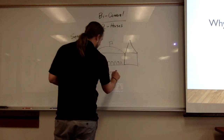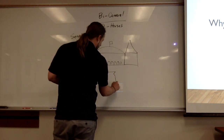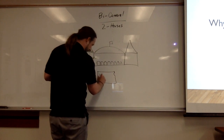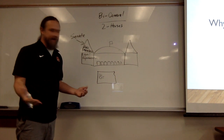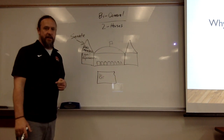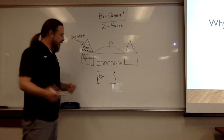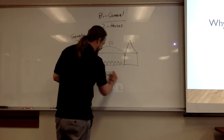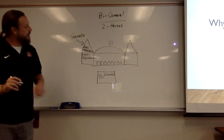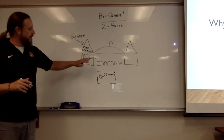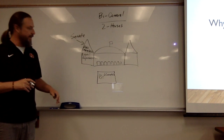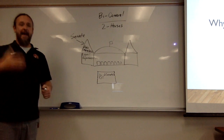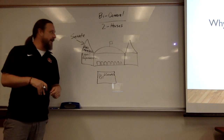If every state receives the same number because it's equal representation, and we know all of them get two, we know that Kansas gets two senators. So one side, two houses — the Senate, 100 members, equal representation. Kansas: two senators. Hawaii: two senators. Maine: two senators. Every state gets two senators. It's based on equal representation.